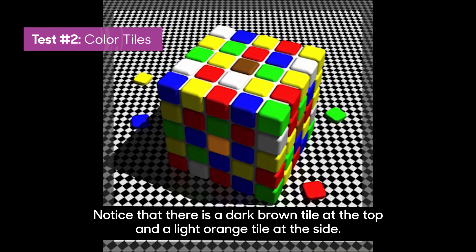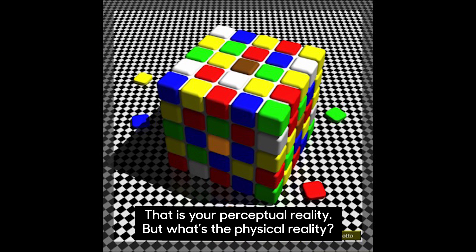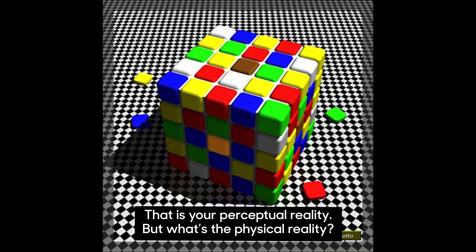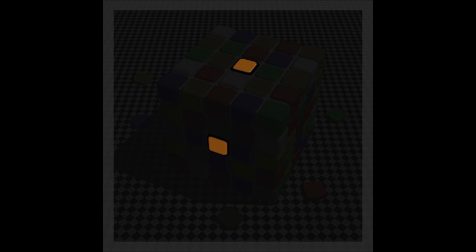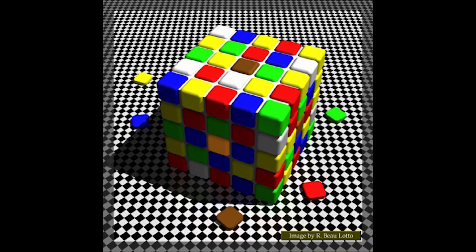And I want you to notice that there's a dark brown tile at the top and a light orange tile at the side, yes? That is your perceptual reality. But what's the physical reality? If I mask off the rest of the scene, but leave those tiles unchanged, you can see they're actually physically identical. Nothing is changing on the screen, except the meaning of the information. You're seeing the meaning, not the data.